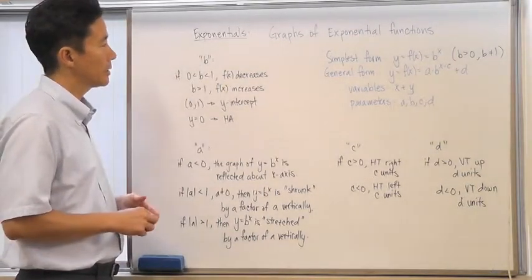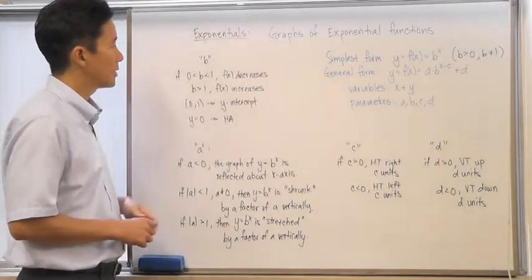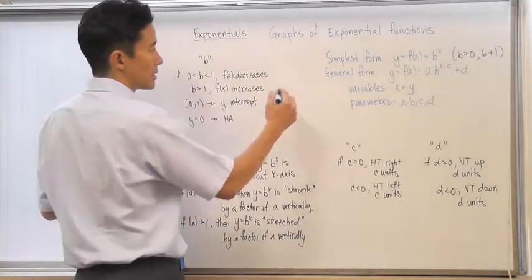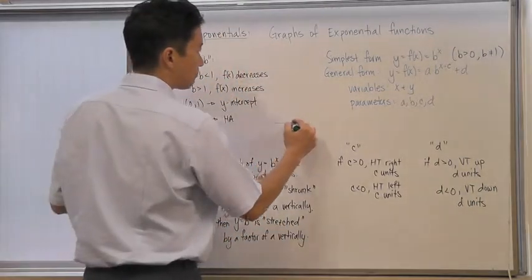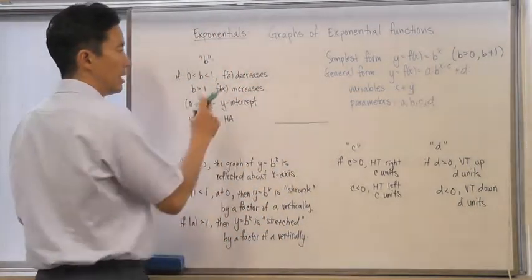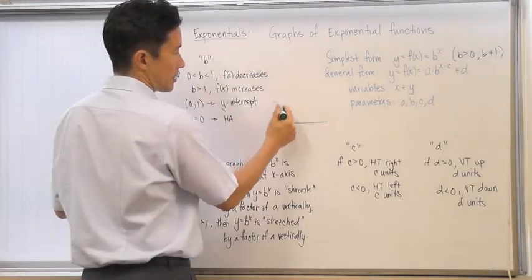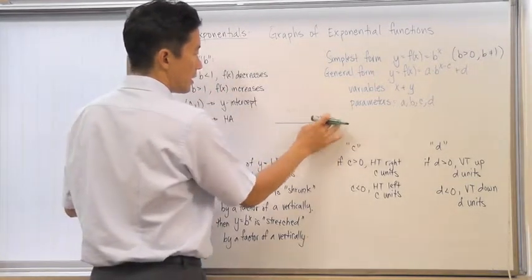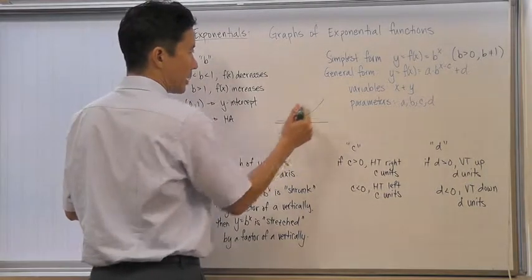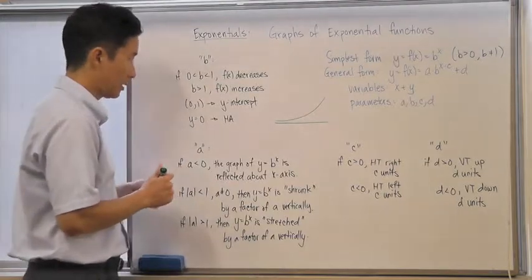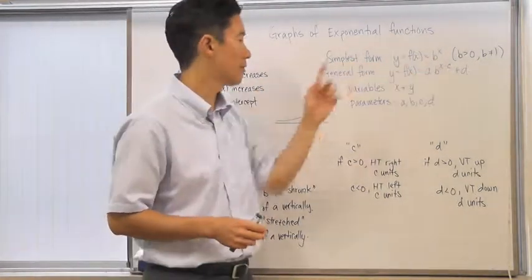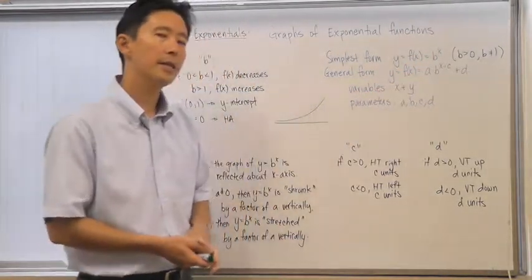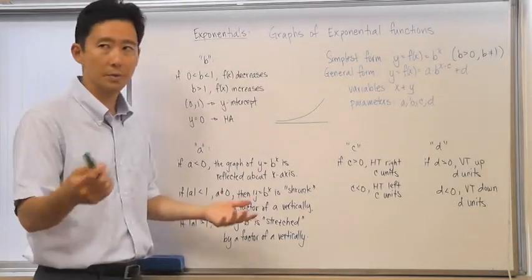If we take a look at parameter b: if b is between 0 and 1 — not equaling 0 or 1 — then f of x will decrease, so the graph is going to slope downward. If b is greater than 1, then f of x is going to increase. With b in its simplest form, the y-intercept is always going to be 1, because substituting 0 for x gives something raised to the 0 power, which is always equal to 1.